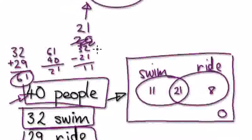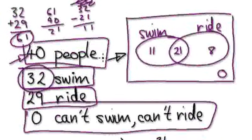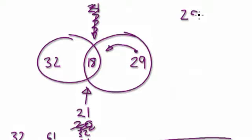So originally, there were 32 who can swim, and then the ride is 29. What I'm trying to show you is that this intersection here must be 21. It can't be any other number. Let's try and do it with 18. 29 people originally, 18 moves into there. So 29 take away 18, so this would be 11. So there must be 11 people left over here.